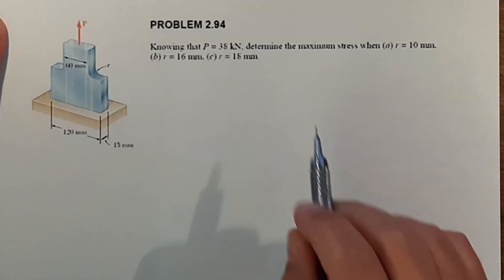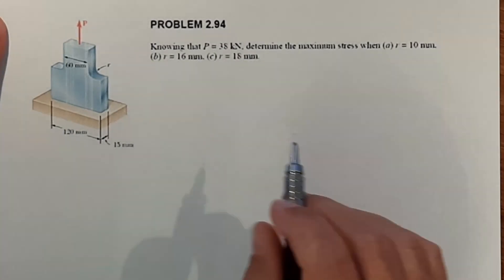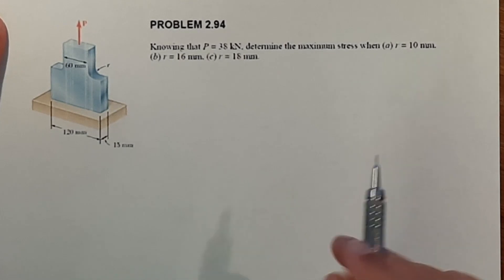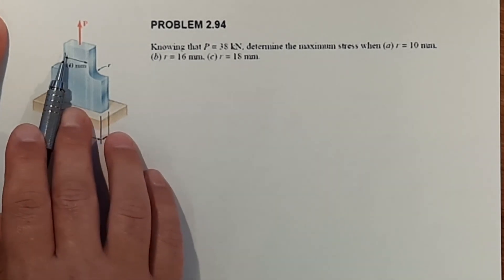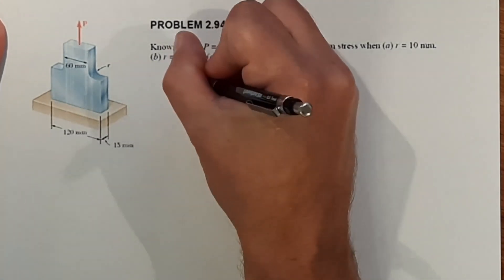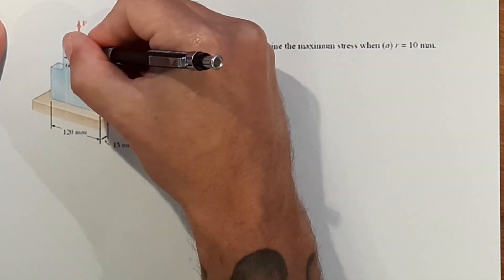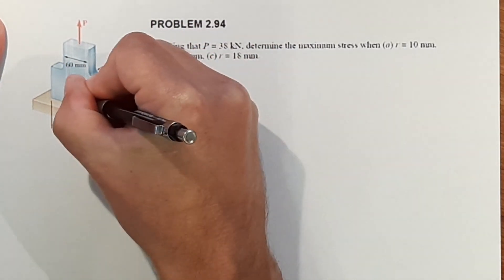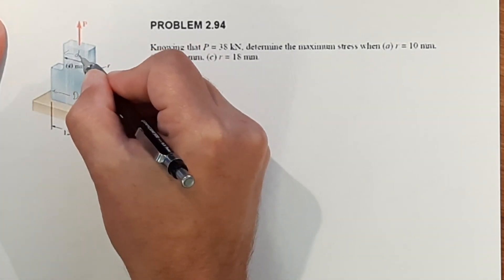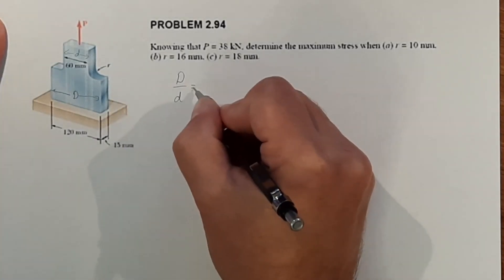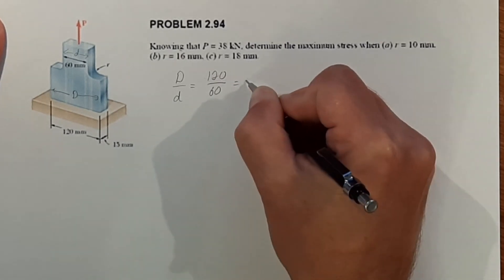So what is the maximum stress that we're going to see in these fillet areas? The first thing we need to do is get the ratio of this width and the reduced width. So that is big D over little d. This is big D, the wider part, and little d is the smaller part. So if we do that we get 120 over 60 and that equals 2.